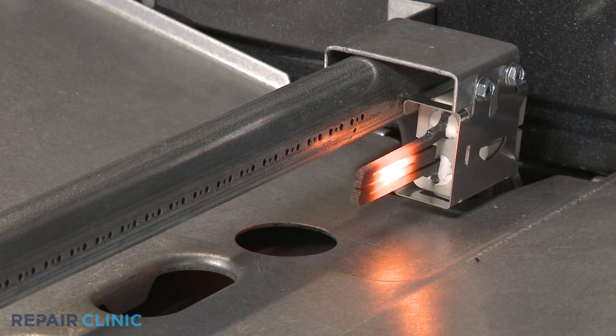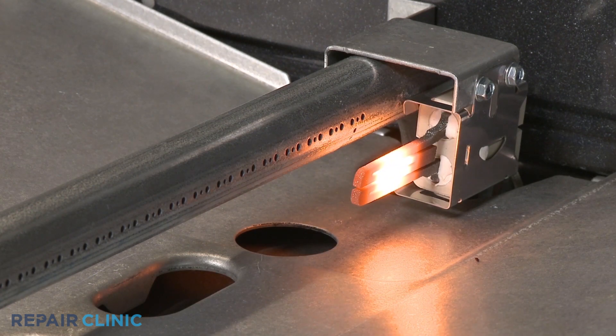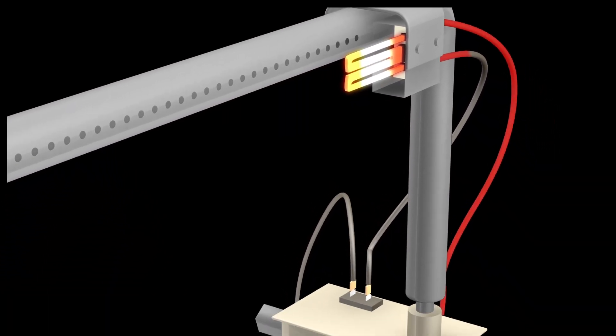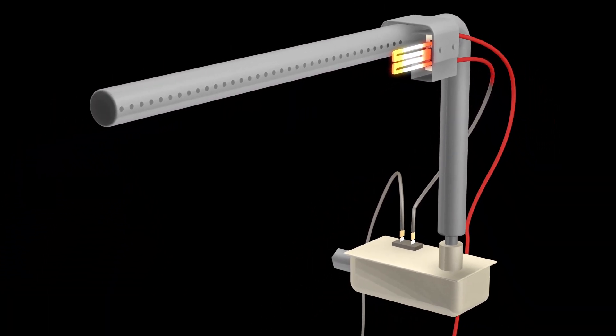If the igniter is glowing but the burner has not been lit after 90 seconds, there is a high probability that the igniter has weakened and is unable to draw the proper amps to open the safety valve and light the burner. In this case, the igniter should be replaced.